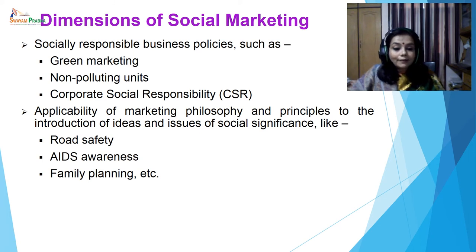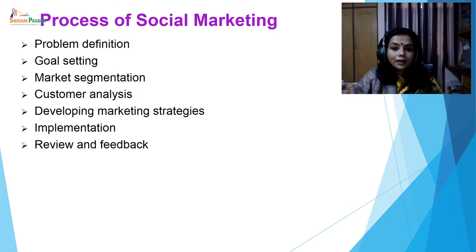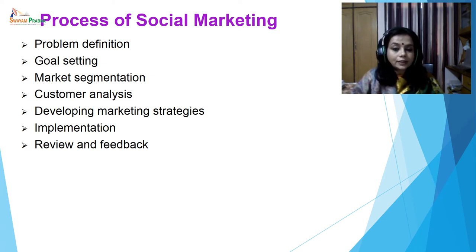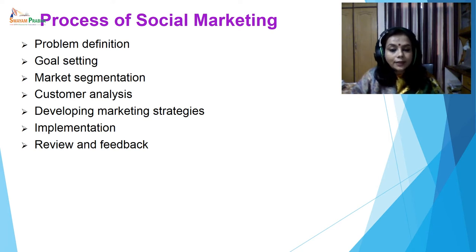Applicability of marketing philosophy and principles to the introduction of ideas and issues of social significance — like road safety, AIDS awareness, and family planning. Process of social marketing begins with problem definition — there are certain environmental or social issues not yet popular among targeted audiences or not yet accepted. You have to find out what the problem is related to that issue. Then goal setting — you set a goal which you want to achieve, such as changing the behavior of the target audience regarding a particular issue.